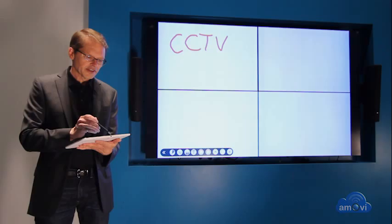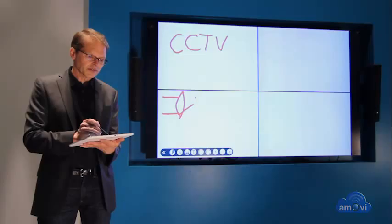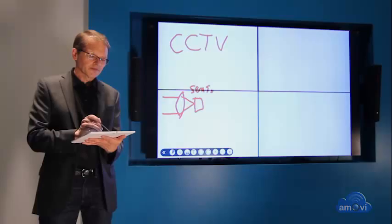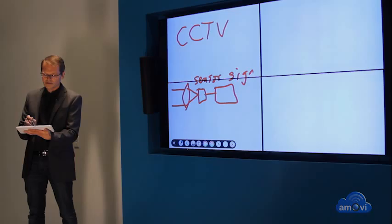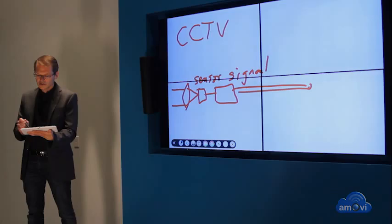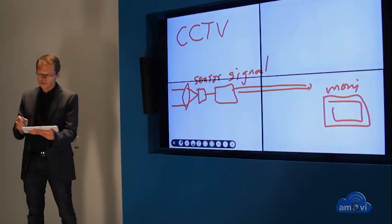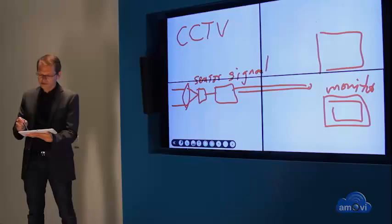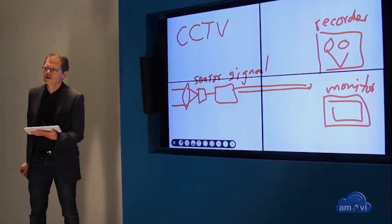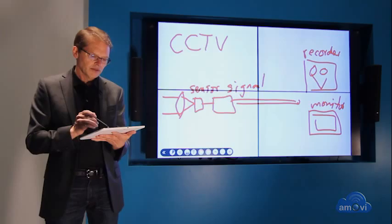So we had something called CCTV, and CCTV was fairly simple technically. We talked about a lens and a sensor, so light is focused on a sensor and that sensor signal is converted to a signal that can be transmitted on a cable, like a coax cable, for example, to a monitor so that a security guard can watch what's going on at the camera end, and a recorder.